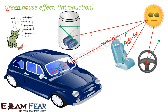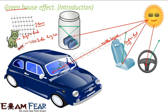Why? Because this glass allows visible light to pass but does not allow infrared to pass. Both these lights have different wavelengths. Visible light has a smaller wavelength, so it will be able to pass through. But infrared has a bigger wavelength, so it will not be able to pass through.